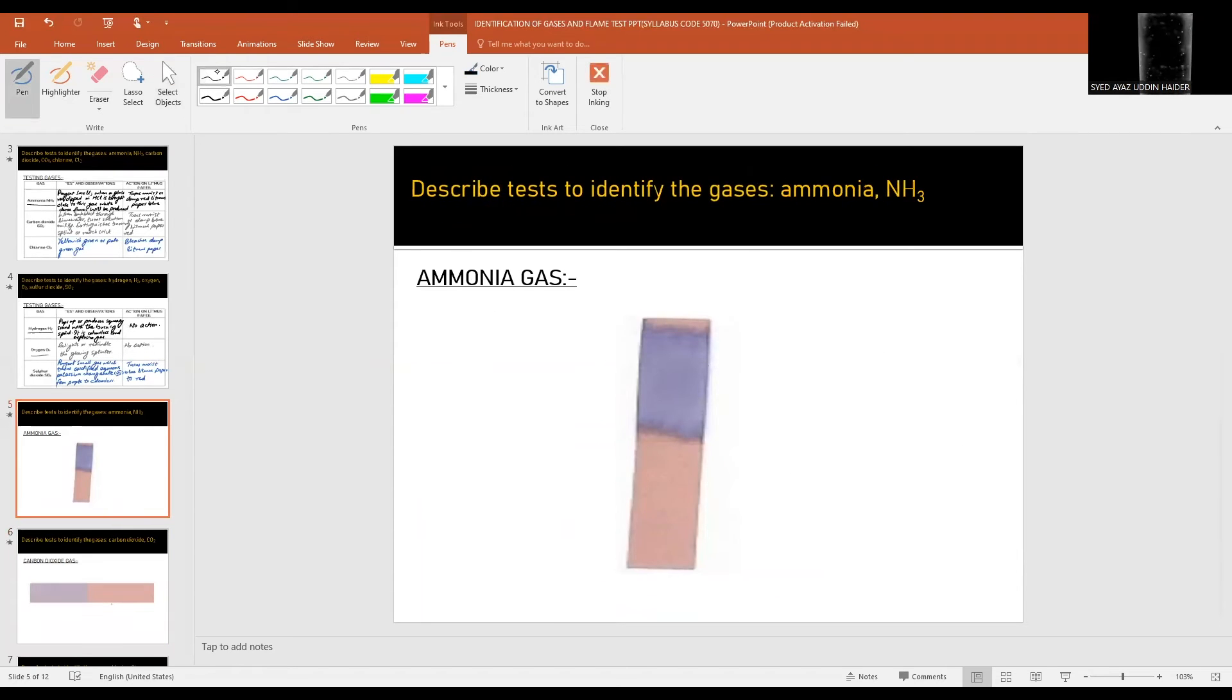Now I will show you the change in color of litmus for ammonia, carbon dioxide, chlorine, and sulfur dioxide. For ammonia you will see the final color is purplish blue when moist or damp red litmus paper is brought near to this pungent smell gas, due to alkaline or basic nature of ammonia in water.